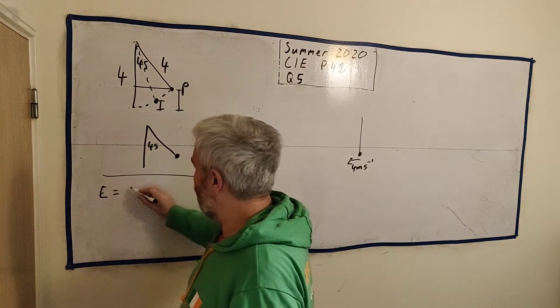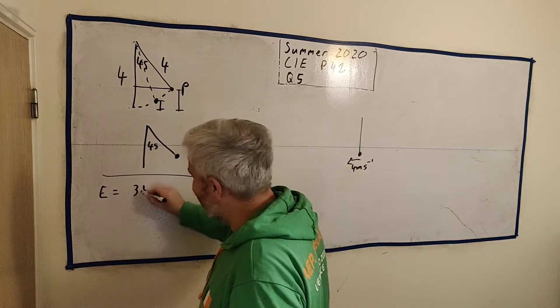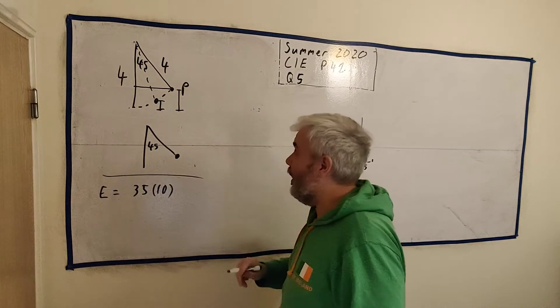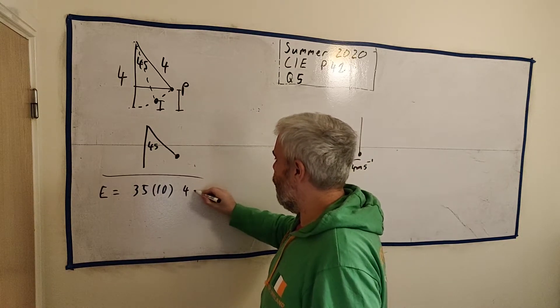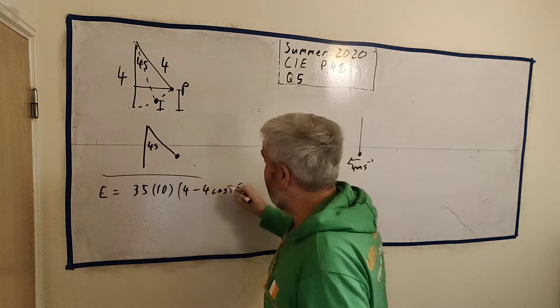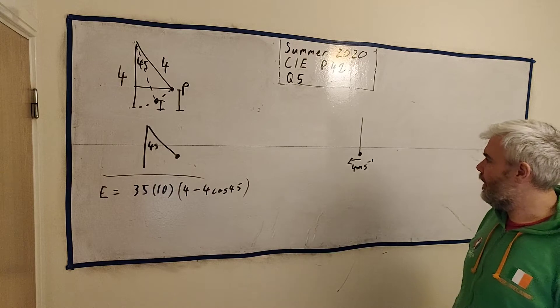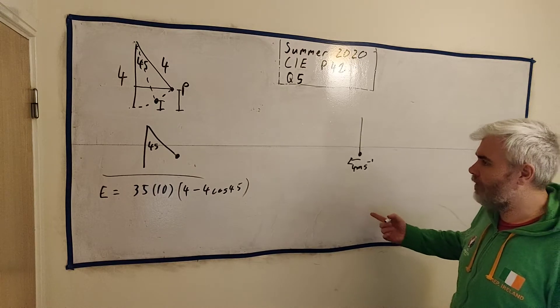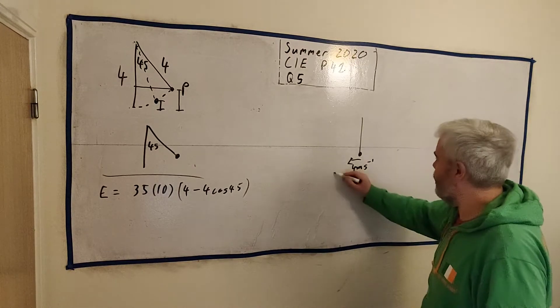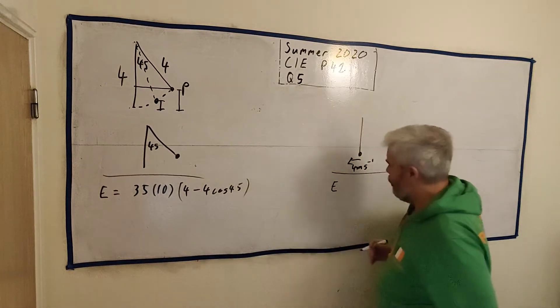And E is equal to 35 multiplied by 10 multiplied by its height, which we'll say is 4 minus 4 cosine 45. If you skip straight to this part, we've worked this out in part 1. That's its height. And in this second part, in the second state, we'll work out its energy. It's not moving, the first part. There's no kinetic energy.